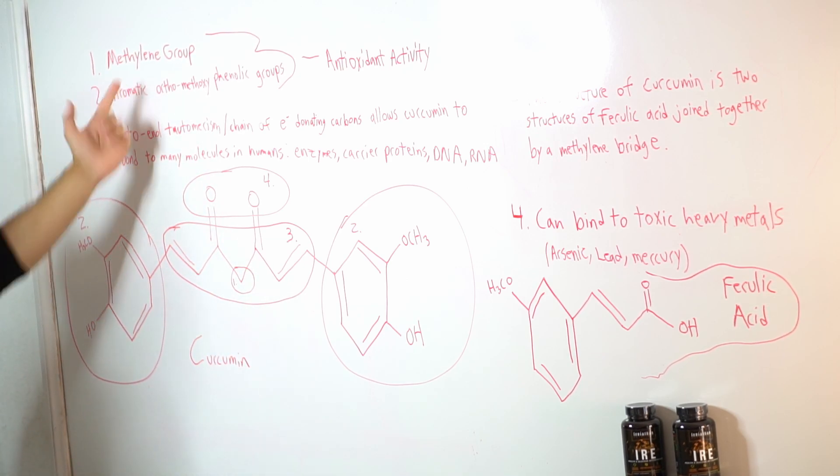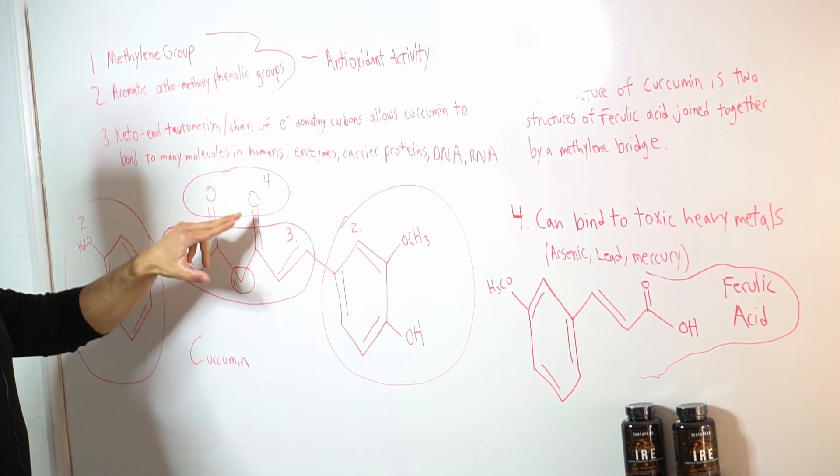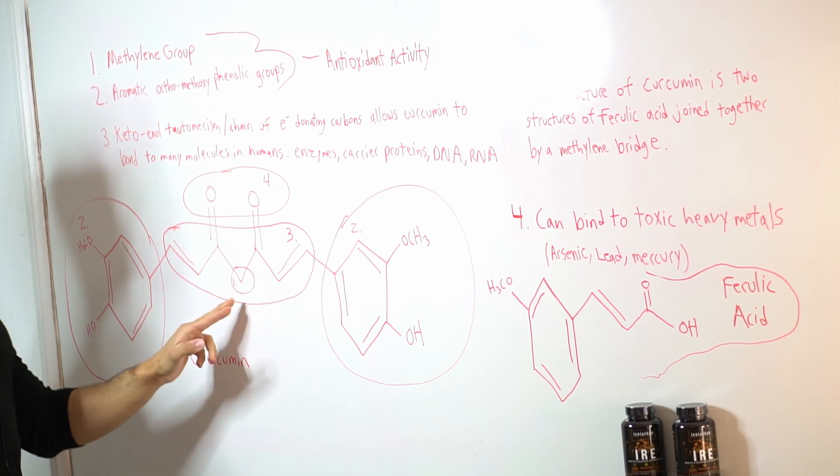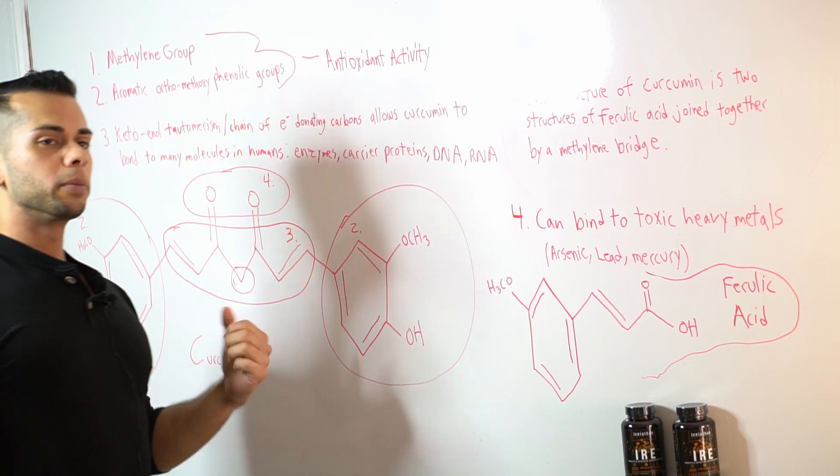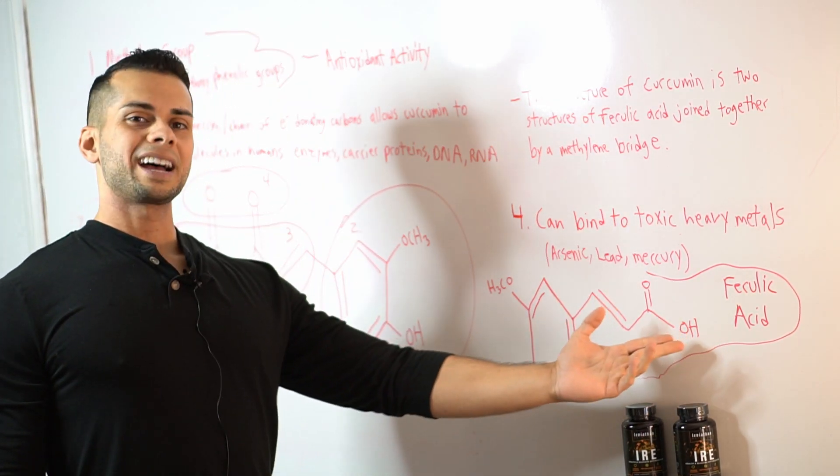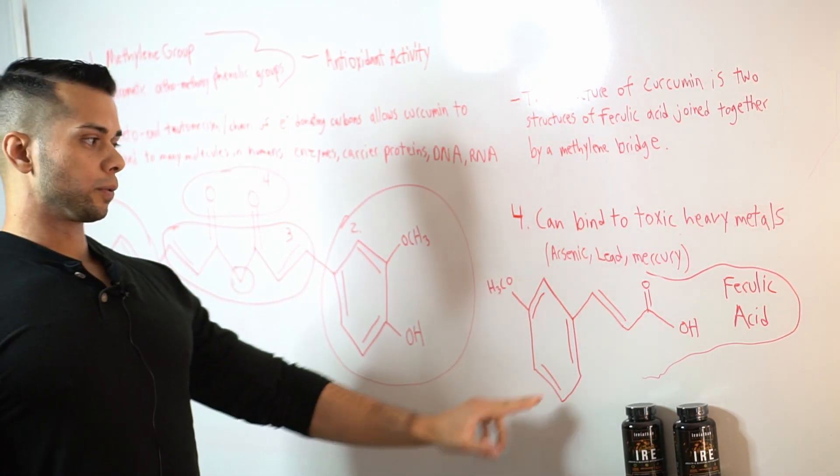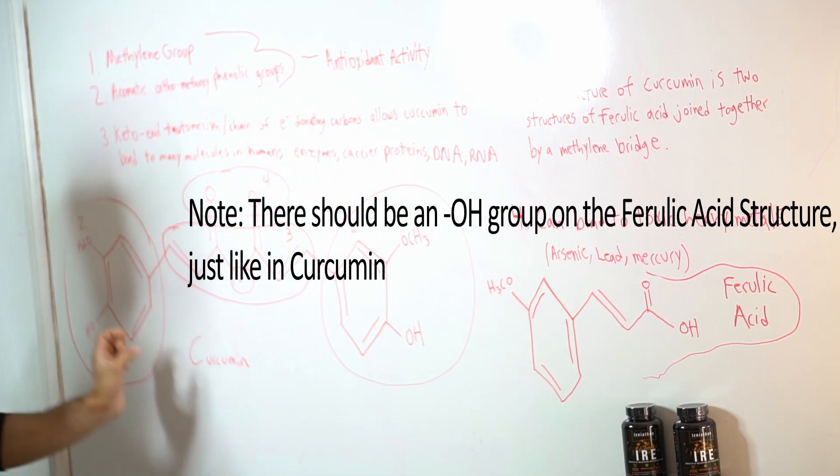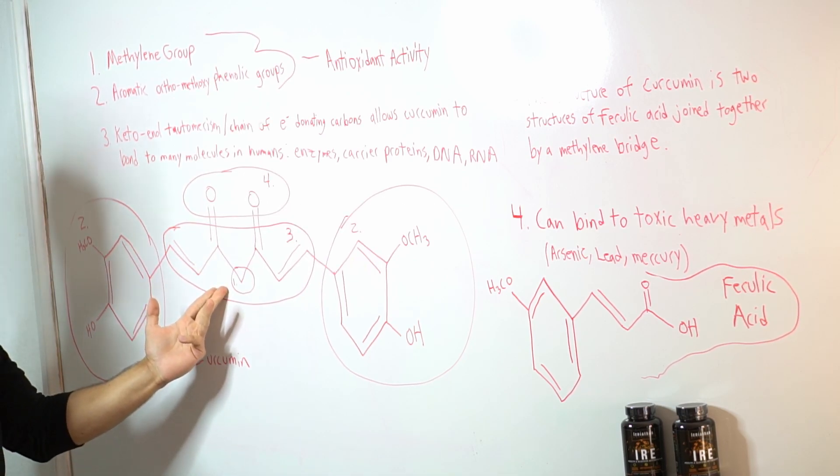So group number one right here is the methylene group. This is where both of these sides of the curcumin chain are linked together and basically what curcumin is is the combination of two different molecules of ferulic acid joined together by this methylene group. This is the structure of ferulic acid so as you can see here it is basically just half of this curcumin structure and then we join it together by the methylene bridge.